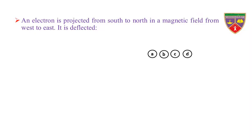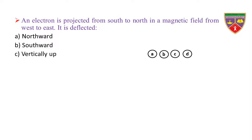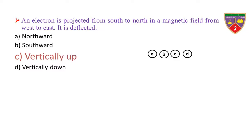An electron is projected from south to north in a magnetic field from west to east. It is deflected: Option A, northward. Option B, southward. Option C, vertically up. Option D, vertically down. The key is vertically up.